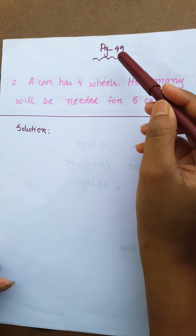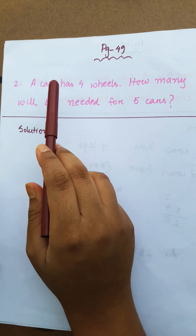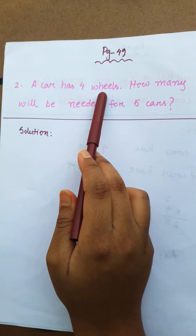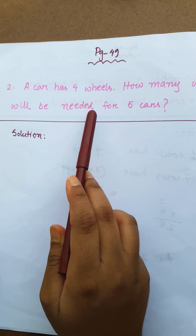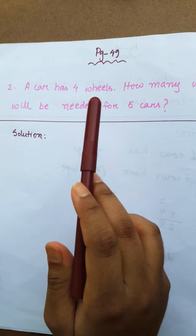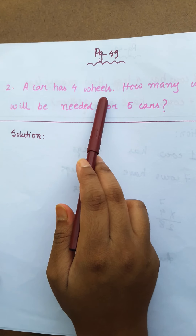Now the next math, page number 14, question 2: A car has 4 wheels. How many wheels will be needed for 5 cars? One car has 4 wheels.